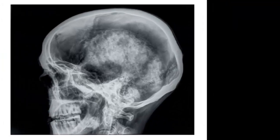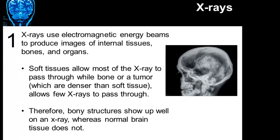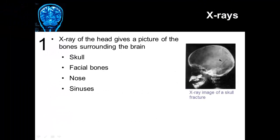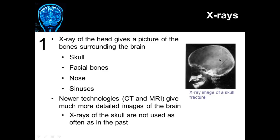On the right-hand side of the slide, you can see the bony skull, the bony vertebra, the bony jawbone, but you don't see the parts of the brain. An x-ray of the head can give you a picture of the bones surrounding the brain such as the skull, facial bones, the nose, and sinuses. Newer technologies such as CT scan or MRI give a much more detailed image of the brain, so x-rays of the skull are really not used as often as they were in the past. You may be able to see a fracture of the skull, but you won't actually see the brain tissue — just the displacement of the bone.